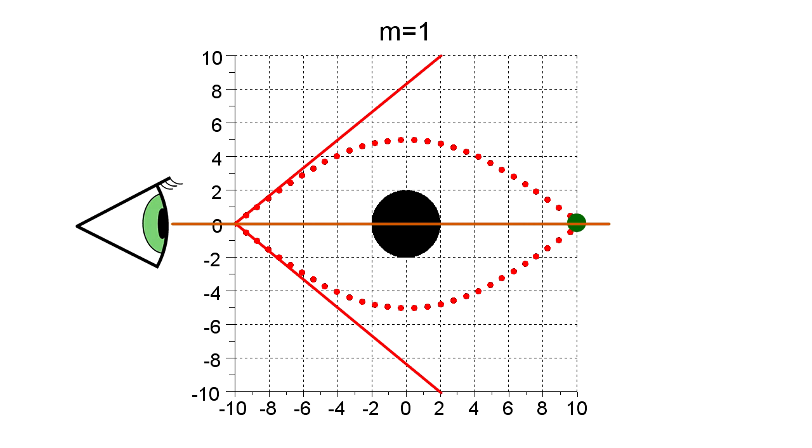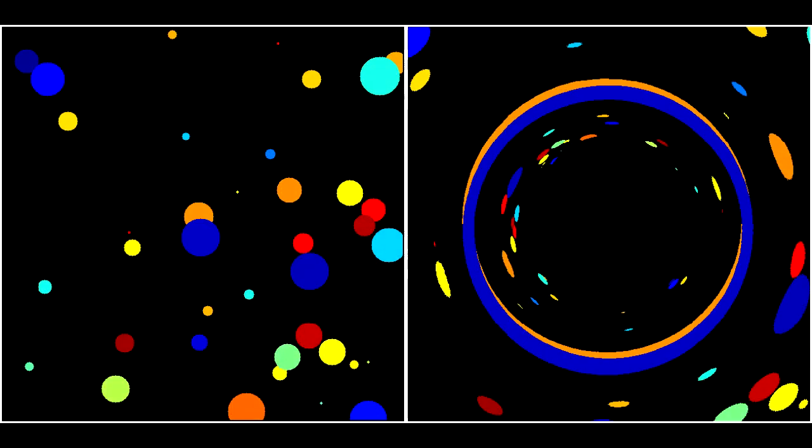Because our eye, the mass, and the object all lie on a single line, there will be symmetric light paths at all angles about the brown line. The two solid red lines sweep out a cone, and we see a circle of light. This is Einstein's ring.